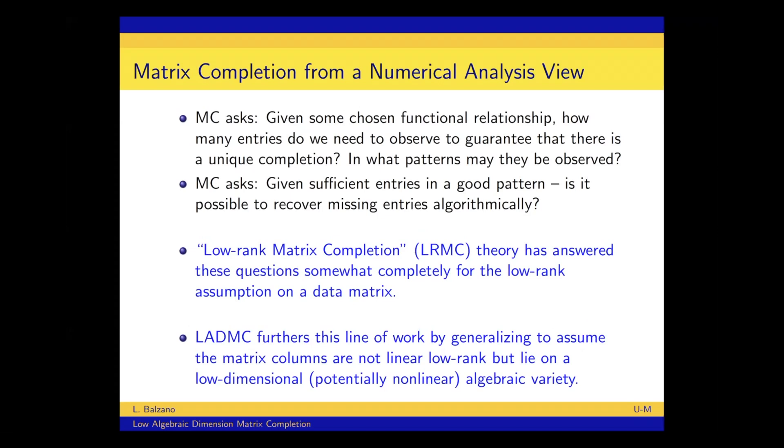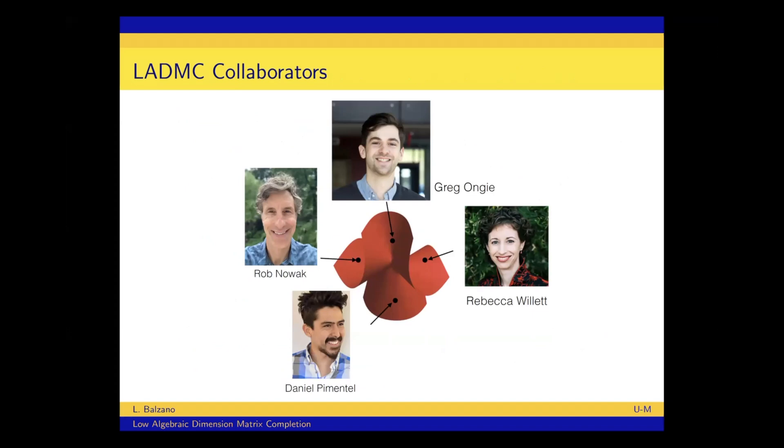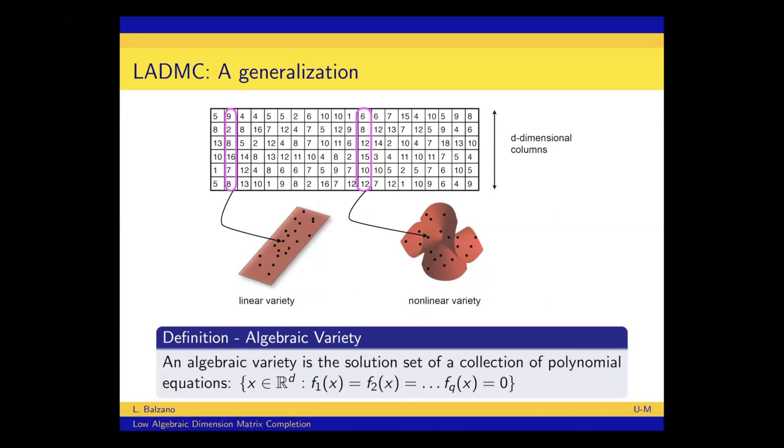But this work that I'm going to tell you about sticks to the numerical analysis perspective and asks the same matrix completion questions for a new model. So we're changing that functional relationship to be not one of linear low rank, but one where the matrix columns lie in a non-linear algebraic variety.